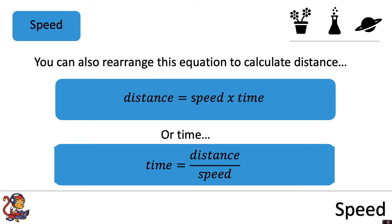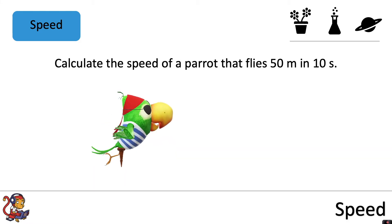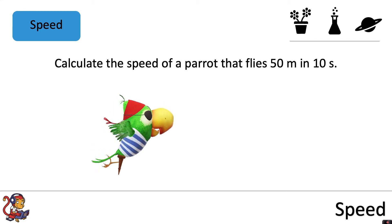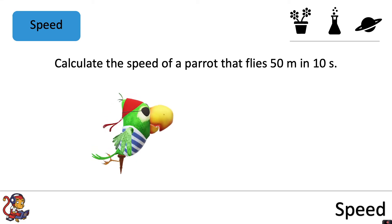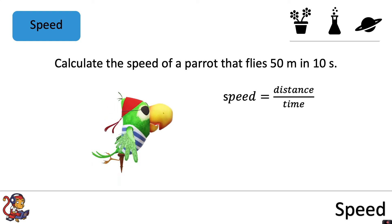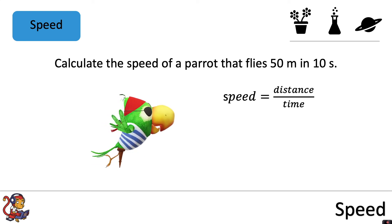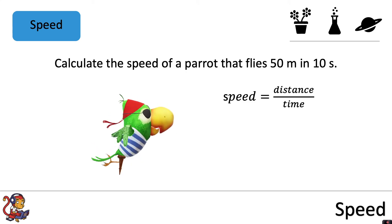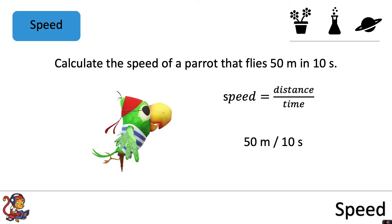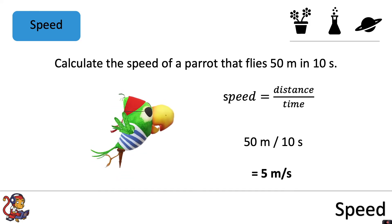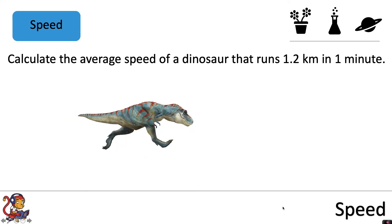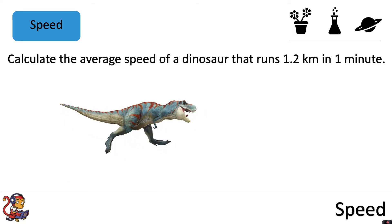Let's look at some examples. This first question says: calculate the speed of a parrot that flies 50 meters in 10 seconds. So we use our equation — speed equals distance divided by time — and put our numbers in. The speed would equal 50 meters divided by 10 seconds, so the speed of the parrot would be 5 meters per second.